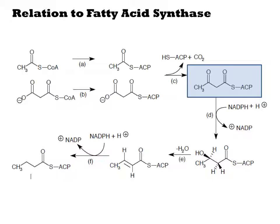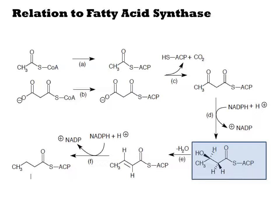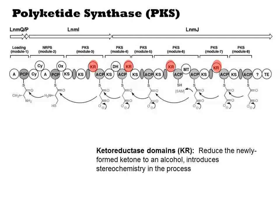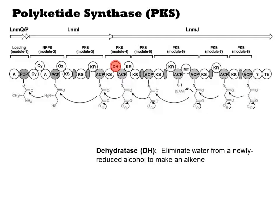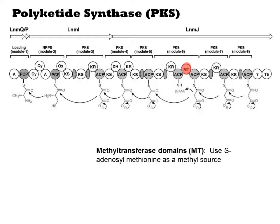If we were to proceed with a fatty acid-like synthesis, the next step would be to reduce the ketone with NADPH. Those modules that contain a ketoreductase or KR domain will perform this reduction reaction, resulting in the alcohol. Since there are two stereochemical outcomes for this reduction, the KR is responsible for choosing which stereoisomer gets produced. The next step in fatty acid synthase was elimination of water to make the olefin. Modules with a DH or dehydratase domain will similarly eliminate water. Unlike fatty acid synthase, PKS modules can contain methyltransferase domains, or MTs, that will methylate newly formed alcohols. Because there needs to be an alcohol to methylate, a module with an MT would have a KR but no DH.